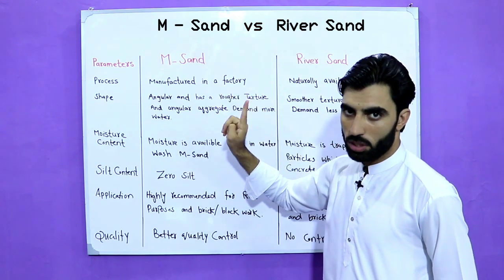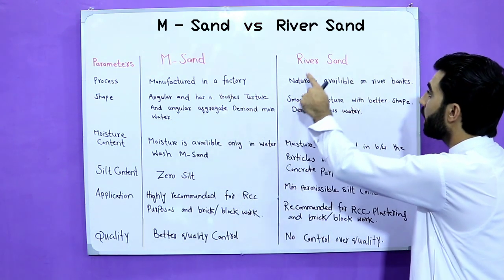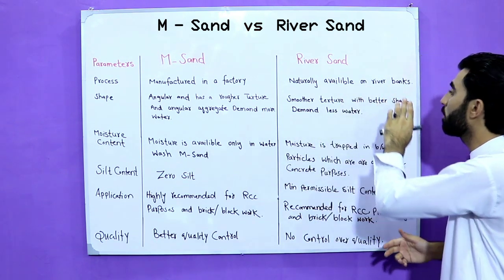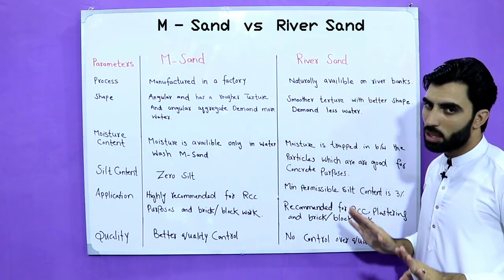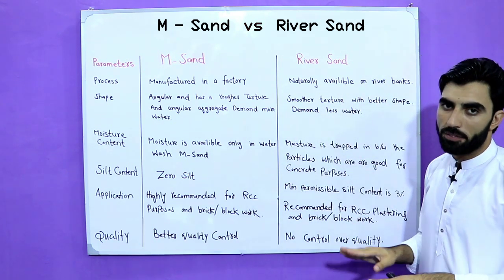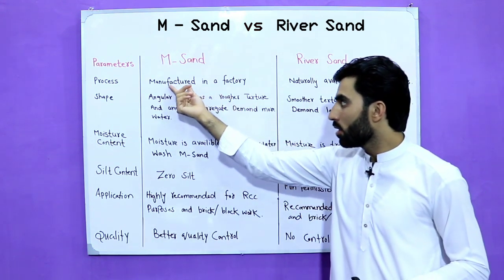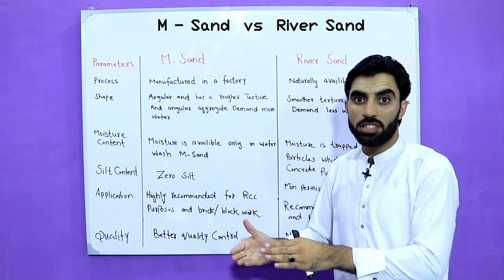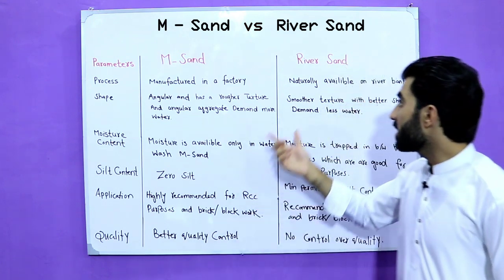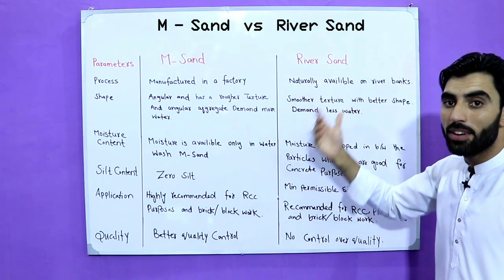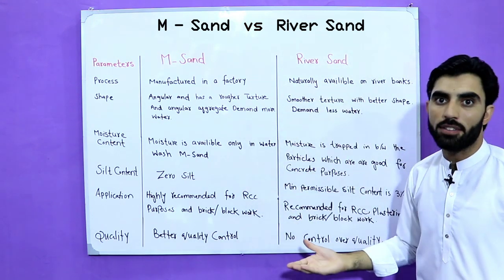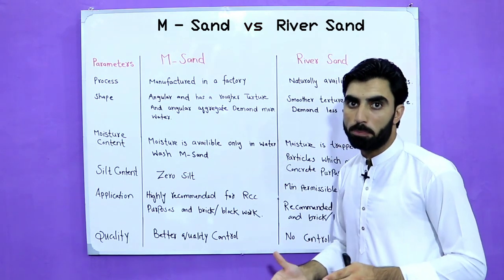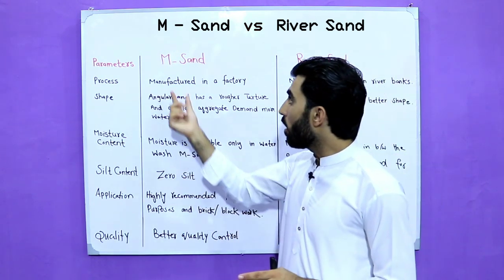Here in the parameter 'process' for both: M-sand is manufactured in a factory, while river sand is naturally available on the river bank. So this is the main difference — one is manufactured in a factory, but the other is naturally available in the river.